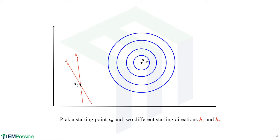We start the algorithm with some function — we're showing the isocontours here. Of course we don't yet know where the overall absolute extrema is, but we're showing it for illustration purposes. In step one of the algorithm, we pick a starting point, and we would like the starting point to be as close to the extremum as we can possibly guess.